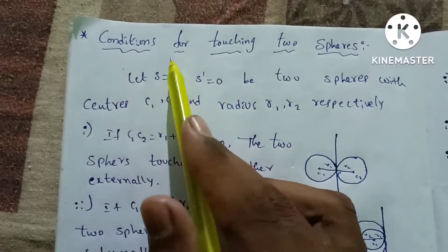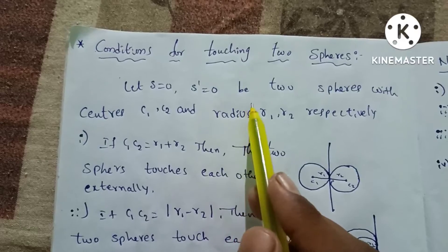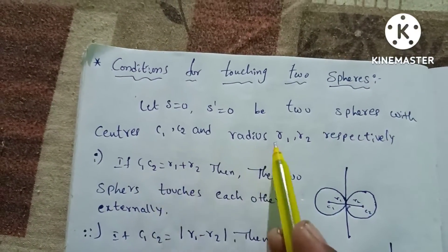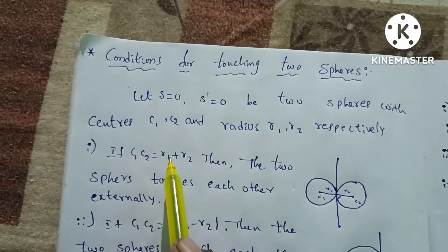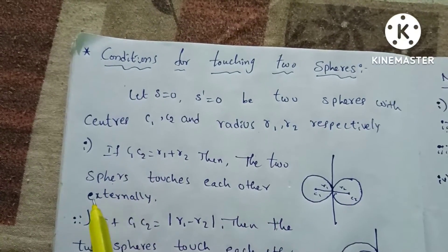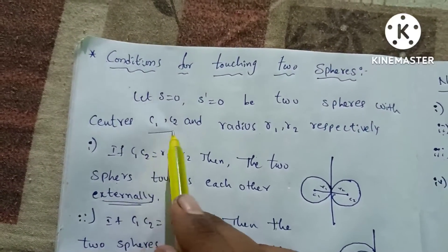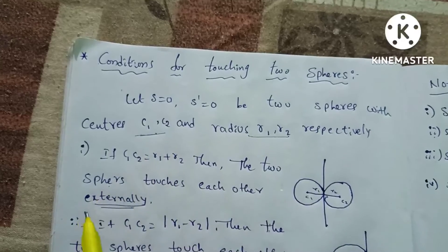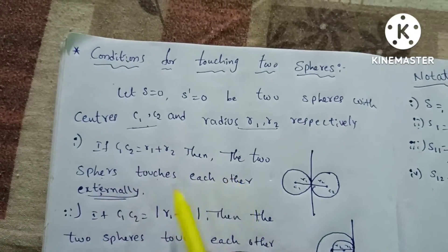These are the conditions for two spheres touching. Let S equal to 0 and S1 equal to 0 be two spheres with centers C1 and C2 and radii R1 and R2 respectively. If C1C2 is equal to R1 plus R2, then the two spheres touch each other externally.